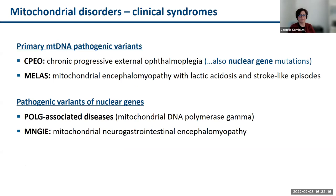Now let's step to very important and frequent mitochondrial clinical syndromes. I would like to start with syndromes traditionally due to primary mitochondrial DNA pathogenic variants, but no longer exclusively so, because nuclear gene mutations also lead to these clinical phenotypes due to rapid progress in molecular genetic analyses. These include chronic progressive external ophthalmoplegia (CPEO), MELAS syndrome (mitochondrial encephalomyopathy with lactic acidosis and stroke-like episodes), and then characteristic syndromes of nuclear genes: POLG-associated diseases and MNGIE (mitochondrial neuro-gastrointestinal encephalomyopathy).